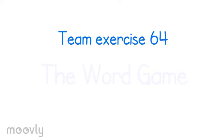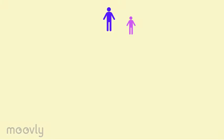Team exercise 64, the word game. During the exercise the team stands in a circle at an equal distance from each other. The trainer gives one person a tennis ball.